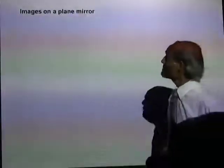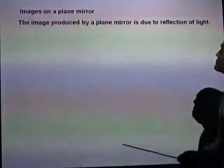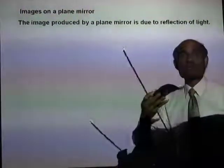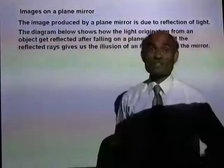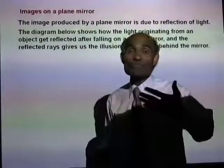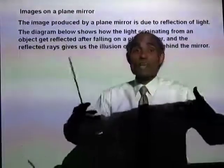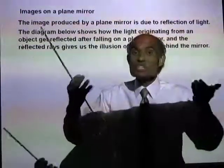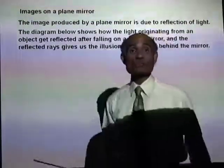Images on a plain mirror — you know that when you look into a plain mirror you see your image. The image produced by a plain mirror is actually due to reflection of light. One of the properties of light is that light travels in straight lines, and that creates a lot of illusion. Light is a very deceiving phenomenon — it can actually create a lot of illusions.